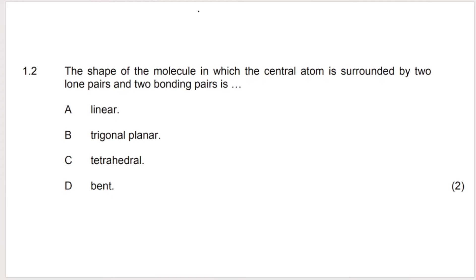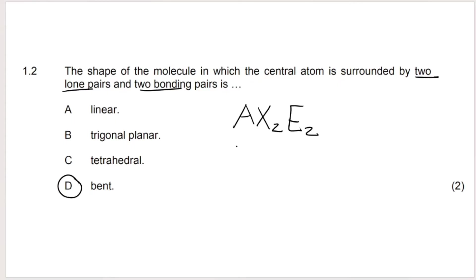The next question asks: the shape of a molecule in which the central atom is surrounded by two lone pairs and two bonding pairs. The general formula for this is AX₂E₂ — A is the central atom, X₂ represents the two bonding pairs, E₂ represents the two lone pairs. This shape is called bent or angular. An example of this is water, H₂O.